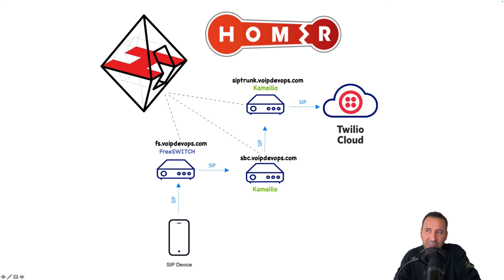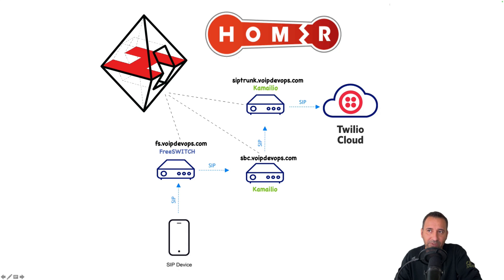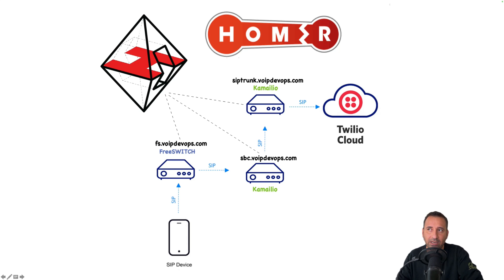The SBC load-balances traffic to my SIP trunk server, which is connected to multiple providers including Twilio. When I send a call out, Zoiper communicates with my FreeSWITCH, then the invite goes: Zoiper → FreeSWITCH → SBC (Kamailio) → SIP trunk → Twilio. All the SIP traffic across this entire path is captured by my Homer server.